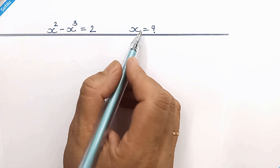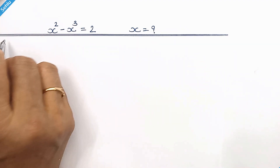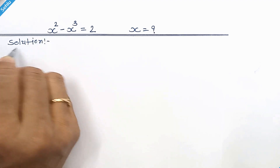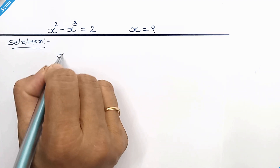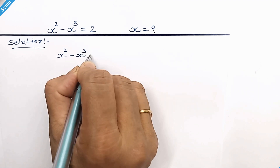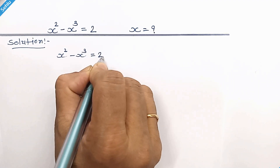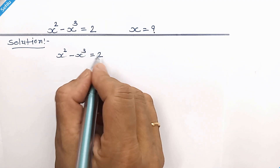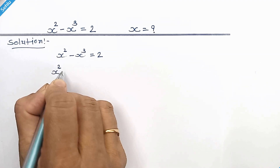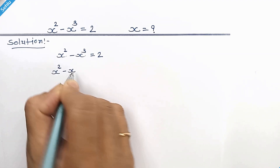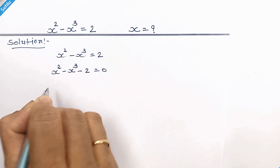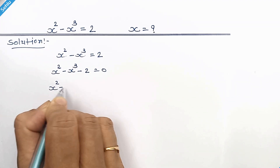Hello friends, finding the x — let's begin. The question is x squared minus x cubed is equal to 2. First, we will move this 2 to the left hand side.